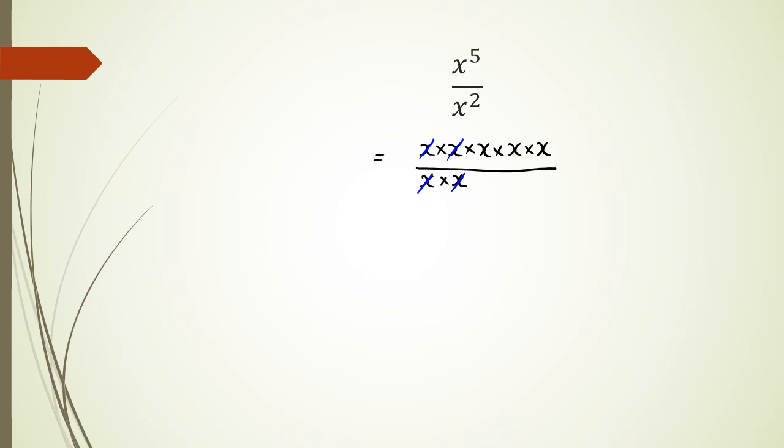Which means I've actually got three x's that are remaining in the numerator, and I shouldn't say three x's, I should have really said x to the power of 3, because it's x times x times x.